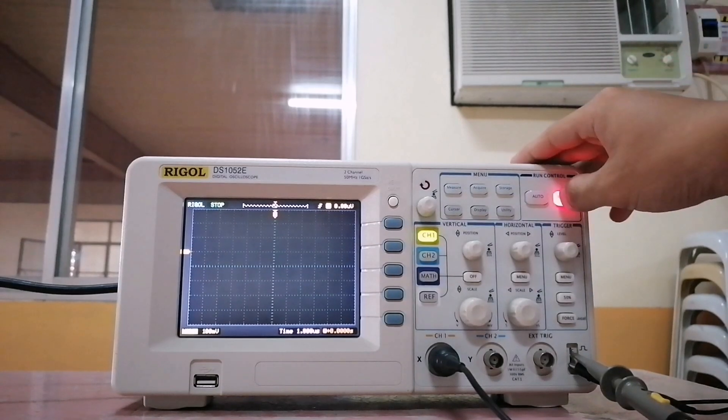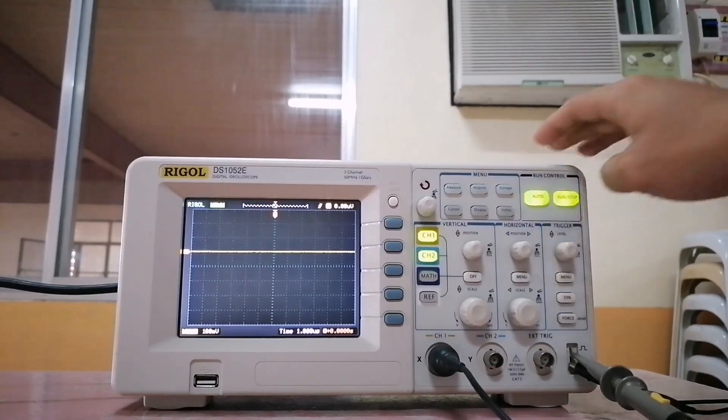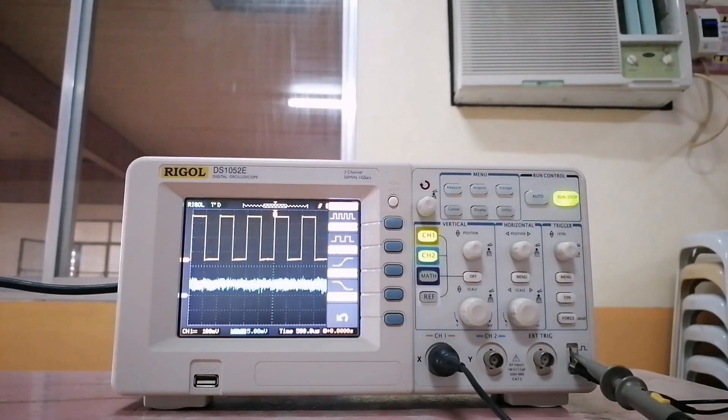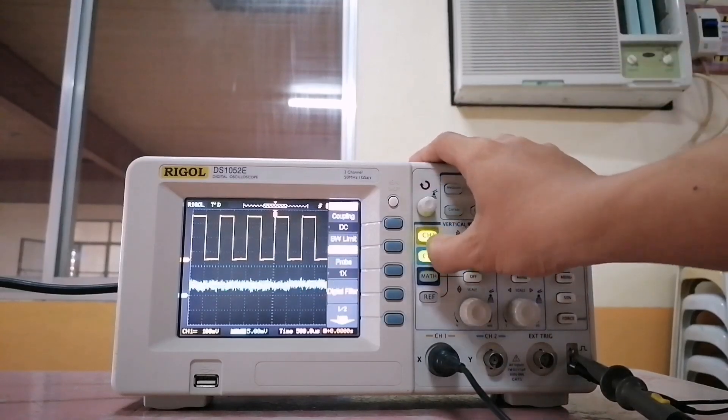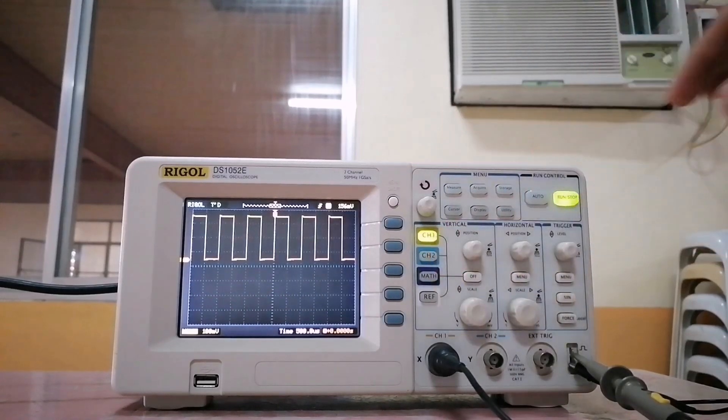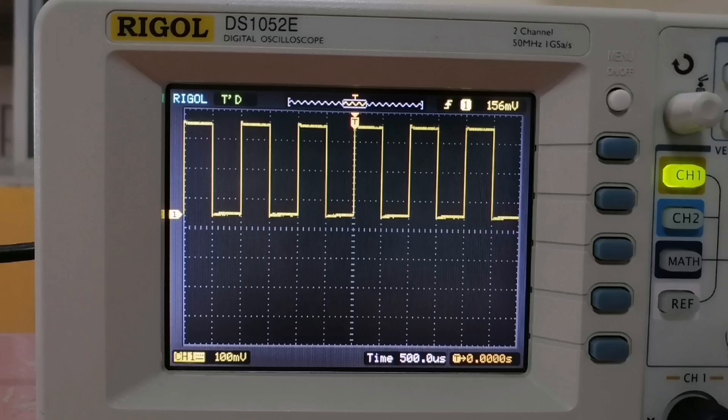Press auto to display the input square wave. The color of the channel tells you which channel is on. On the screen, you'll notice the tag here, which tells you where the zero ground reference is with respect to the signal.